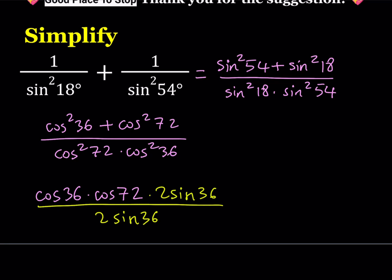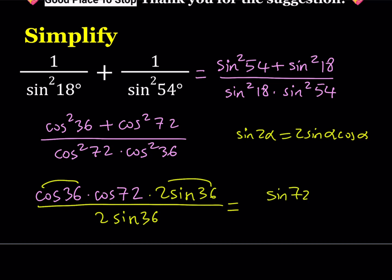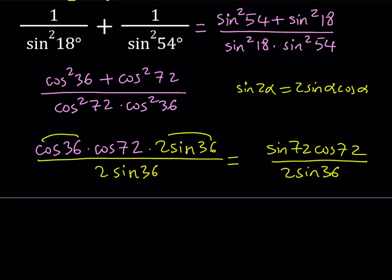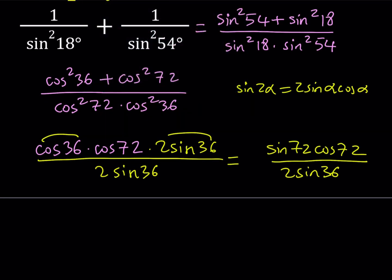Why did I do that? Because I want to take advantage of the double angle formula: sine 2α equals 2 sine α cosine α. So two sine 36 cosine 36 can be written as sine of 72 degrees, and cosine 72 will stay there. At the bottom we have two times sine 36. I got the sine 2α expression again, so I'm going to multiply the top and bottom by two.